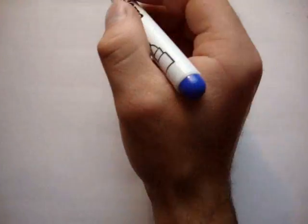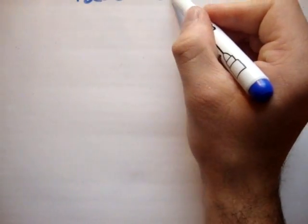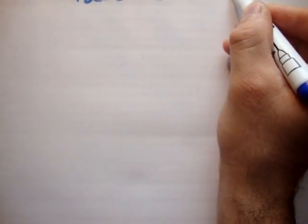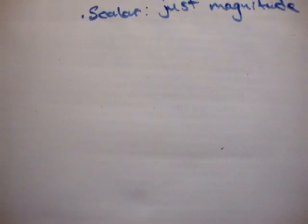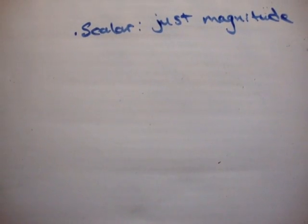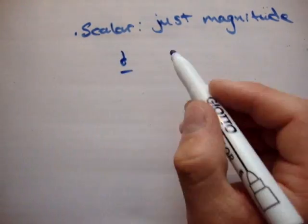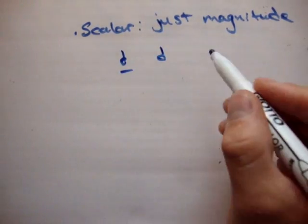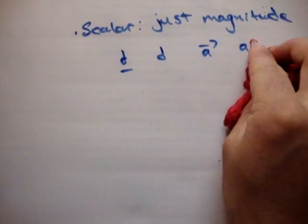So that's adding and subtracting vectors. Now, what's a scalar? A vector has both magnitude and direction, whereas a scalar is just magnitude — it's just a number. For example, writing d with an underline or arrow is the vector d, while writing just d is the scalar d. Similarly, vector a versus scalar a — it's just a number.